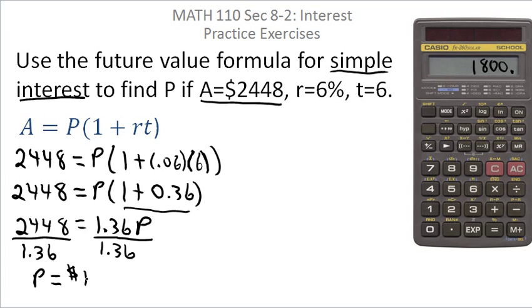The principal or present value is $1800. In other words, if I end up with $2448 in an account where the principal stayed for six years at a 6% simple interest rate,